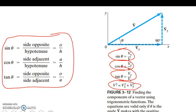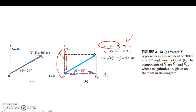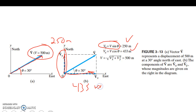Here's an example: we have a displacement vector of 500 meters at a 30-degree angle north of east. To find the x and y components: the y-component is v times sine of θ, so 500 times sine of 30 equals 250 meters. The x-component is v times cosine of θ, so 500 times cosine of 30 equals 433 meters. To check: using the Pythagorean theorem on 250 and 433 gives us back 500, which confirms our work.